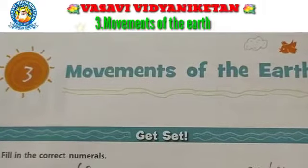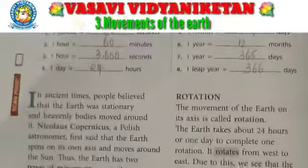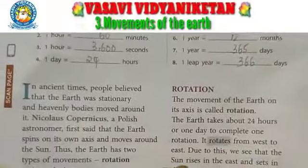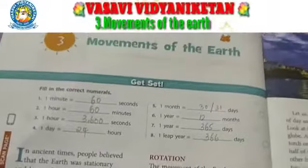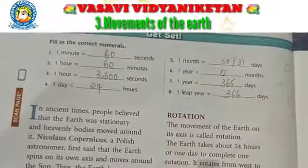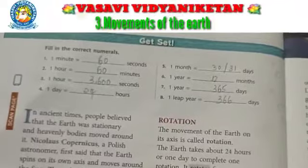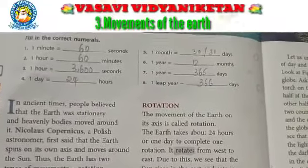The lesson is 'Movements of the Earth.' Yesterday I gave the introduction about the movement of the earth. Nicholas Copernicus first said that our earth spins on its own axis and moves around the sun. So those two movements are rotation and revolution.